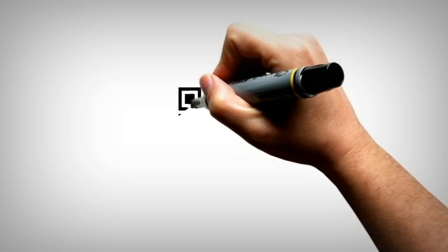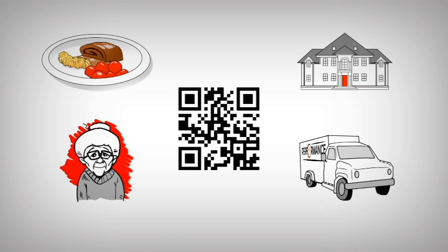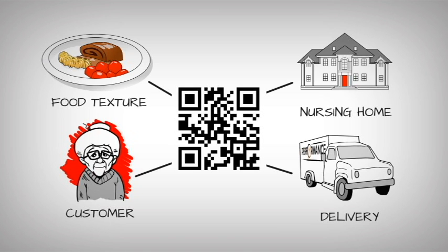This information is sent to a secure database located at a local food production unit, where a QR code is printed onto a plate carrying information about Erna as a customer, Erna's food preferences, things like taste and texture, and Erna as a resident of a local nursing home.